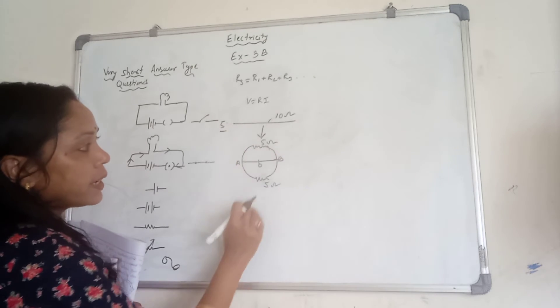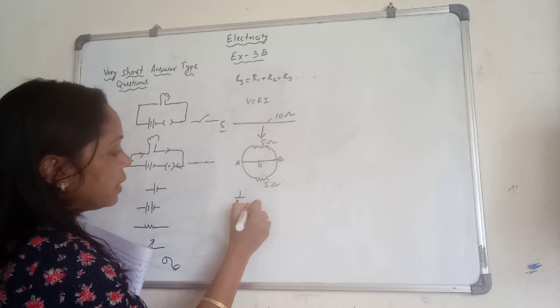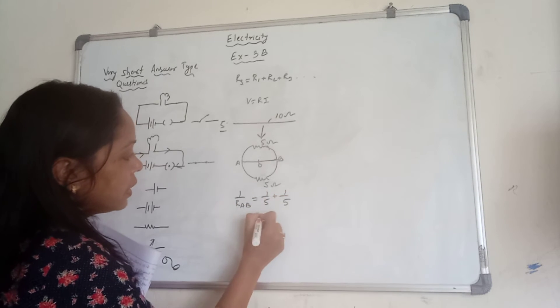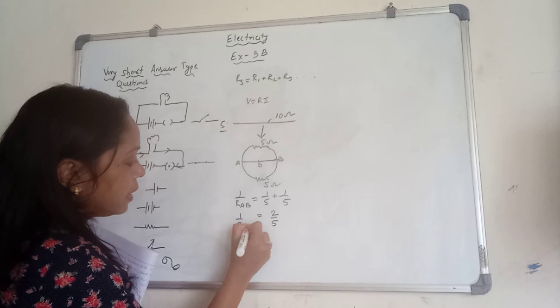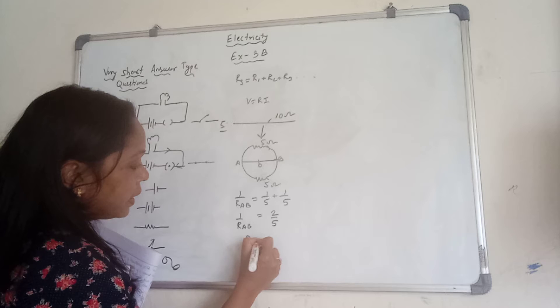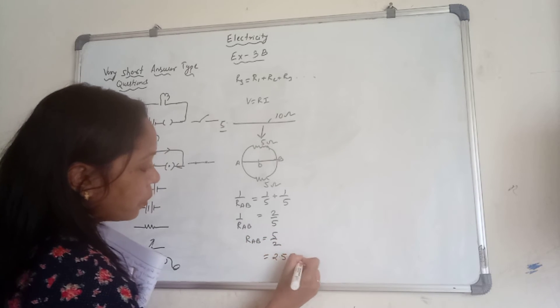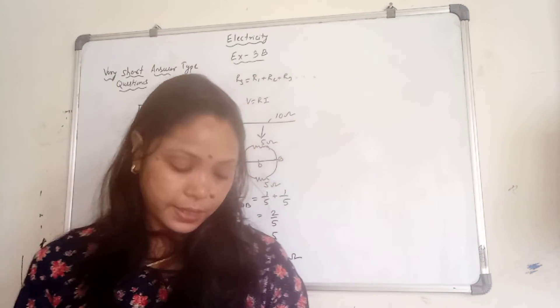If it is 20 Ohm, then this one will be 10 and 10. Now, you have to find the equivalent resistance between A and B. If you see, they are connected in parallel. So, I can write here 1 by RAB is equal to 1 by 5 plus 1 by 5. This becomes 2 by 5. So, RAB is equal to 5 by 2, which is equal to 2.5 Ohm.